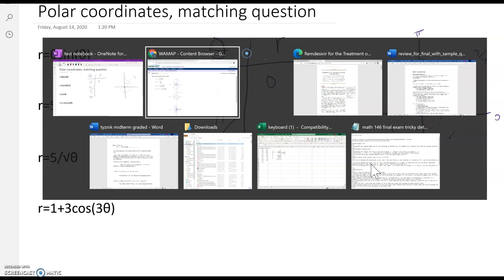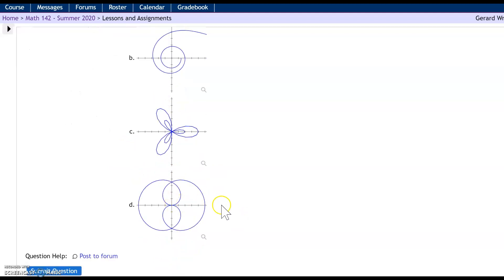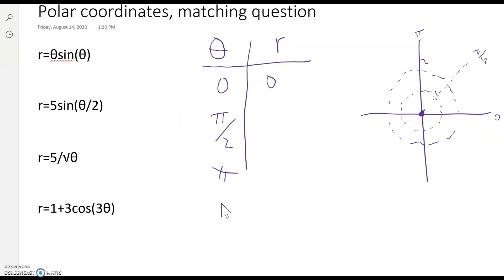Now let's take a look at our matching. So far, I can rule out B because there's no point in the middle. So this equation cannot be B, but A has a point in the middle, so does C, so does D. At least I've got it narrowed down to three possibilities.